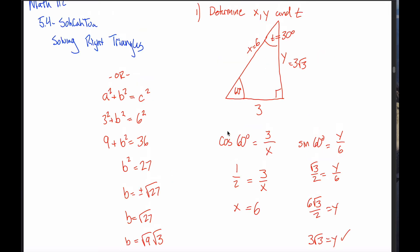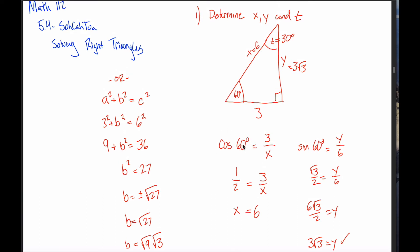Suppose you don't like 60 degrees and you just can't remember it from your unit circle. What I could have done — the minute I figured out this was 30 degrees, before I knew the lengths of either leg — instead of saying the cosine of 60 degrees is 3 over x, I could have used this 30 degrees. But be careful: if you use this 30 degrees, this 3 is no longer adjacent. This 3 is adjacent to this 60 degree angle and opposite this 30 degree angle. So to use the 30 degree angle, I cannot use cosine, I have to use sine.